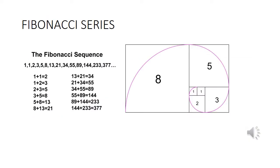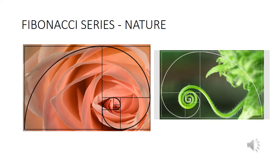This is the Fibonacci series, also called the golden mean or the golden ratio. This volute can be found in everything in nature. In these images you can see how the Fibonacci series and the volute can be made over a rose and the formation of a worm.